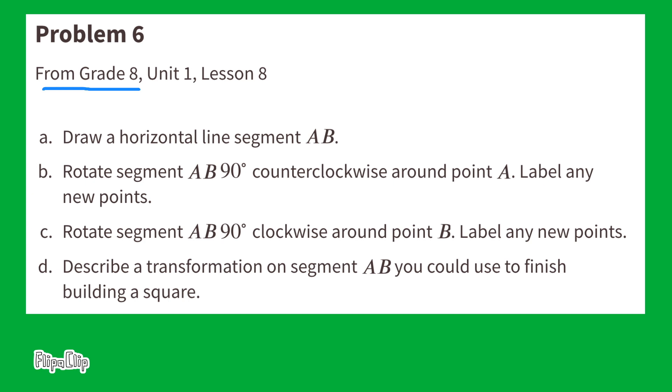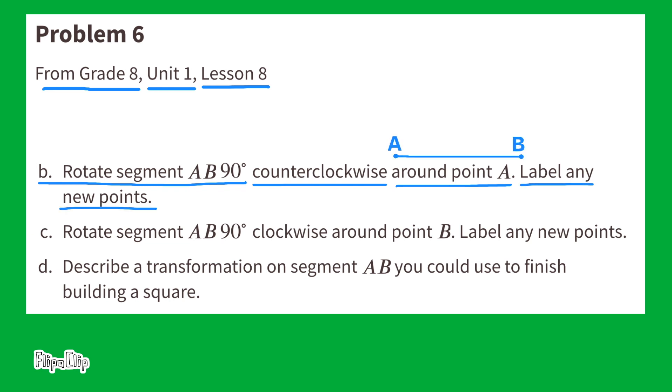Problem number six from eighth grade unit one lesson eight. A. Draw a horizontal line segment AB. B. Rotate segment AB 90 degrees counterclockwise around point A. Label any new points.